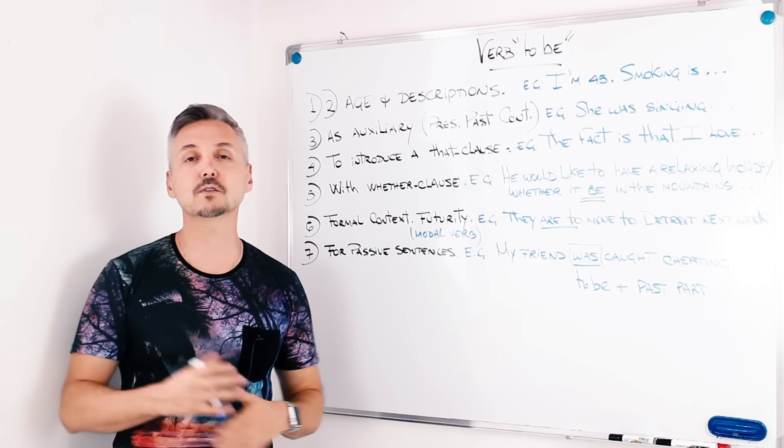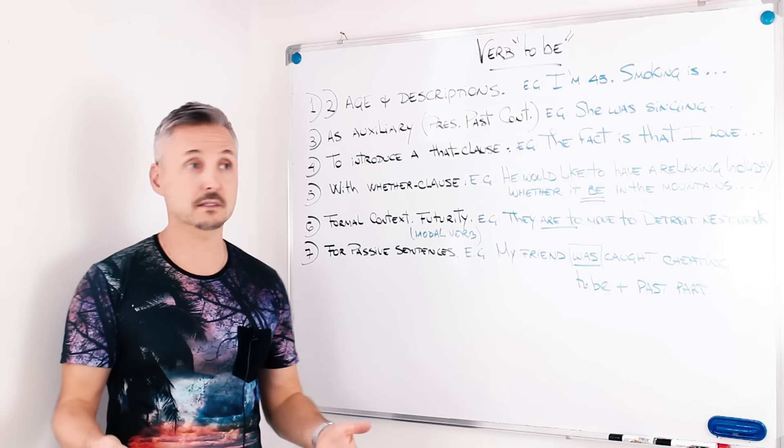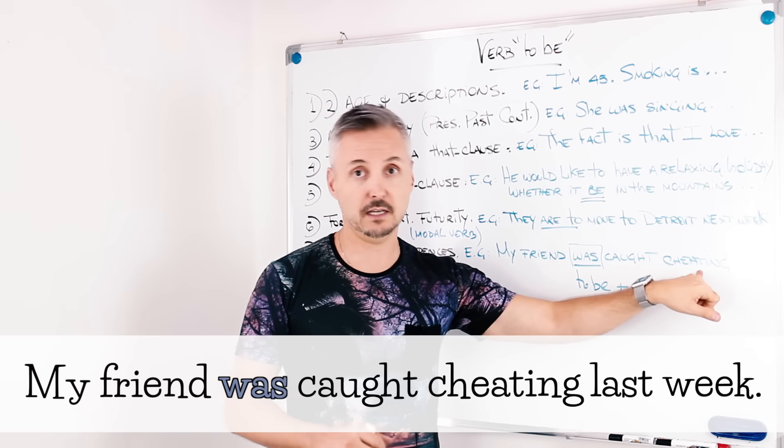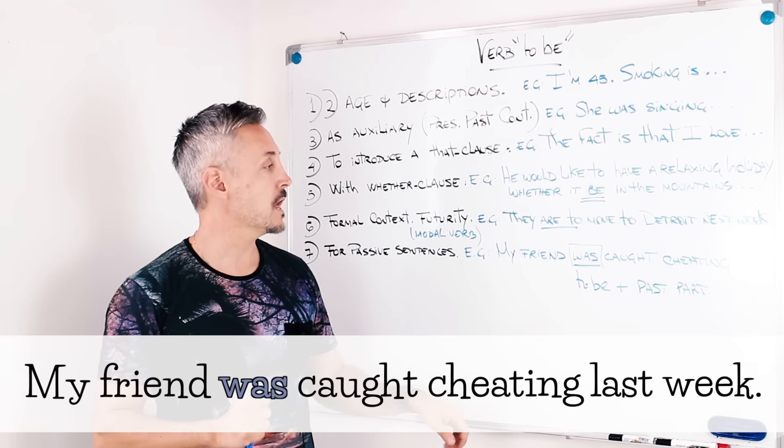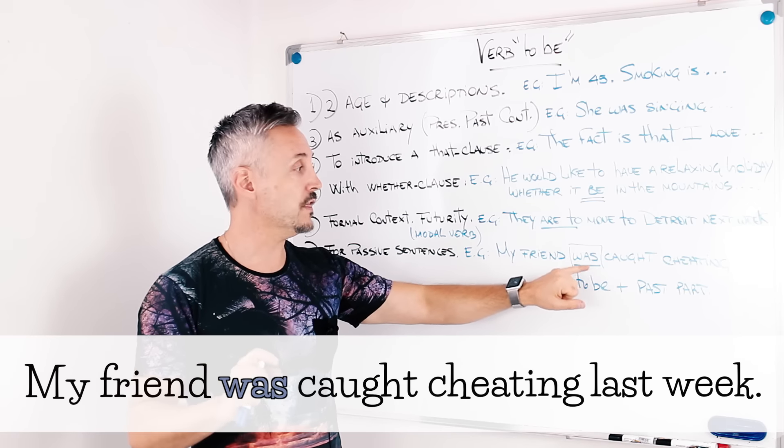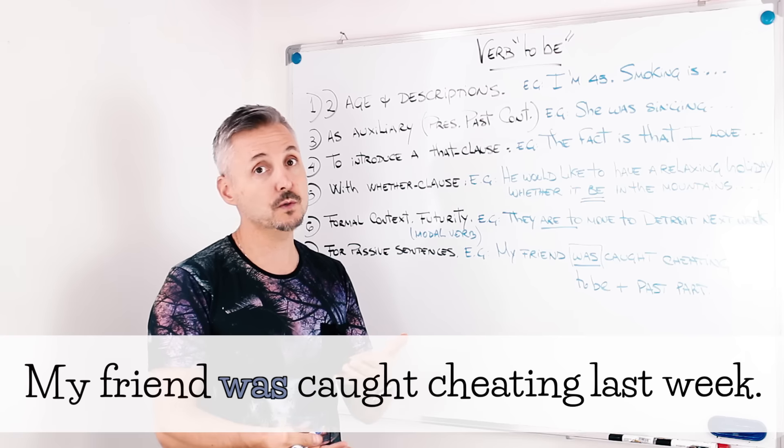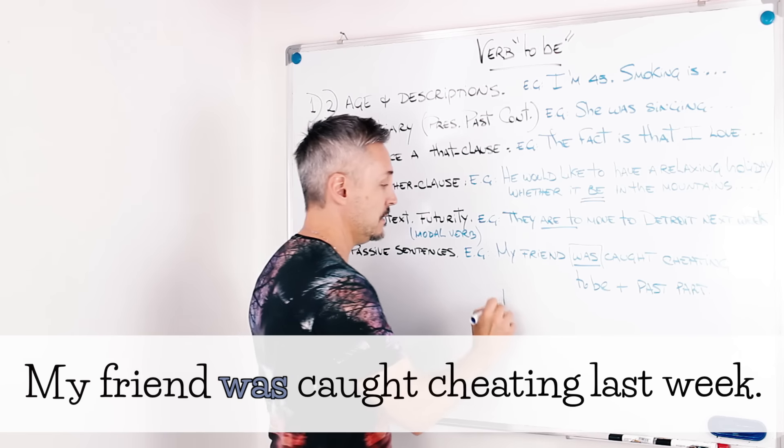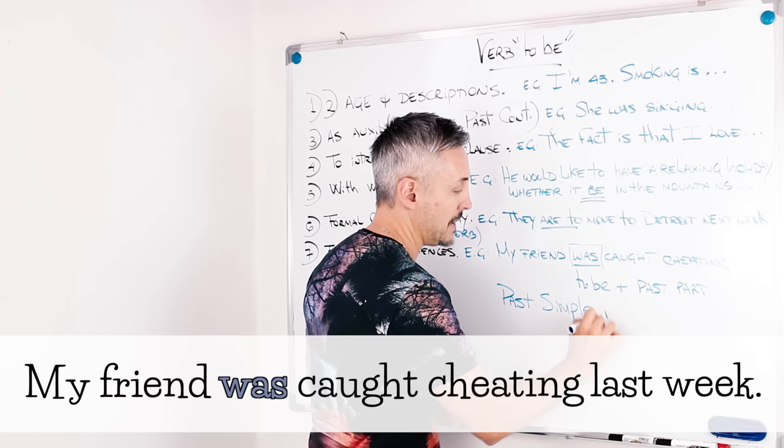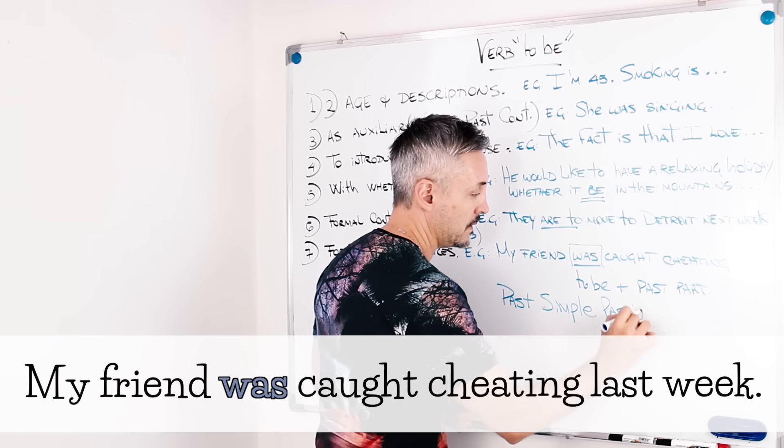The verb to be is also used for passive sentences. And the example was, my friend was caught cheating last week. Remember that we have to comply with the tense we're using. So in this case, is past simple passive. Right?